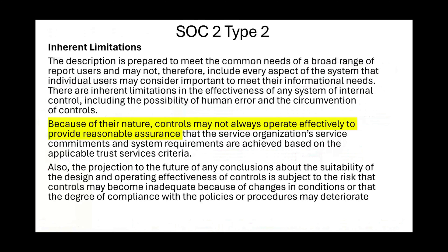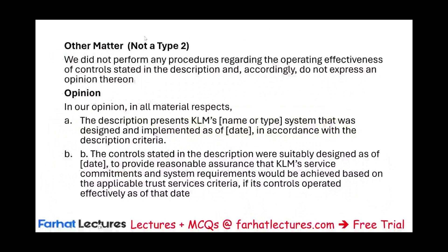In a SOC 2 Type 2, there is also an inherent limitation, but here we have to specifically address the operating effectiveness of the controls. Because of their nature, controls may not always operate effectively. Again, we're projecting about the future, but we have to be specific about the operating effectiveness, because remember, SOC 2 Type 2 is for a period of time. The projection to the future of any conclusion about suitability carries the same concept — we cannot make any future statement. In a Type 1 report, we have an 'other matter' paragraph, and in this other matter we specify this is not a Type 2 — we did not perform any procedures regarding the operating effectiveness of the controls.